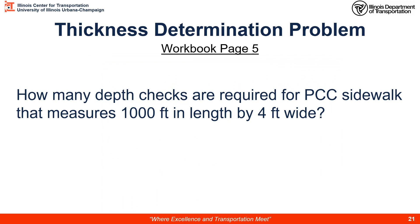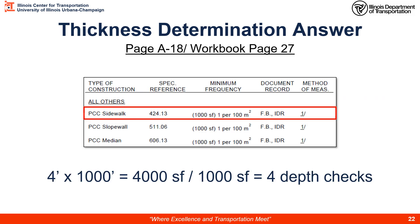On workbook page 5, this is a good time to pause the video. How many depth checks are required for PCC sidewalk that measures 1,000 feet in length by 4 feet wide? On page A18, our table shows the minimum frequency for PCC sidewalk is 1 per every 1,000 square feet. So 4 feet × 1,000 feet = 4,000 square feet ÷ 1,000 = at least 4 depth checks. You can see this answer on page 27 in the workbook.